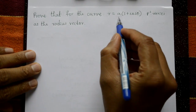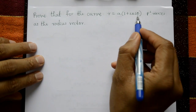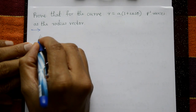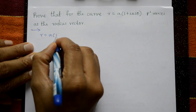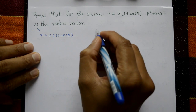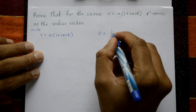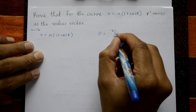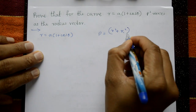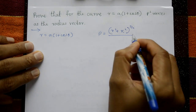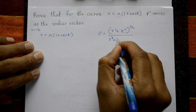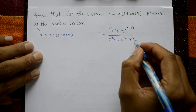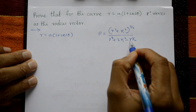For the curve r = a(1 + cosθ), prove that ρ² varies as the radius vector. Given r = a(1 + cosθ), the radius of curvature in polar form r = f(θ) uses the formula: ρ = (r² + r1²)^(3/2) divided by (r² + 2r1² − r·r2), where r1 and r2 are required.